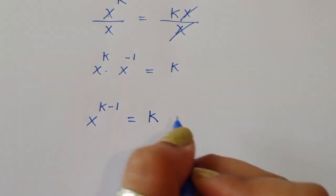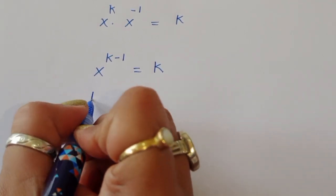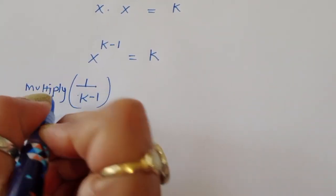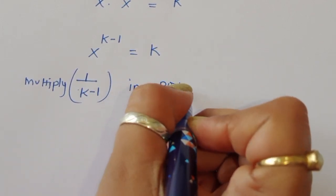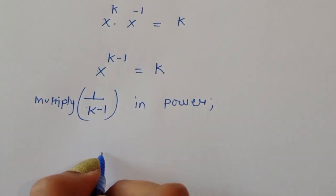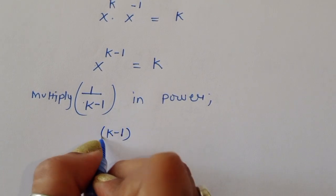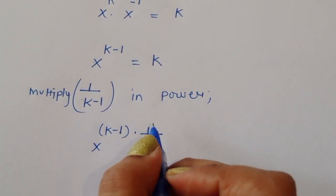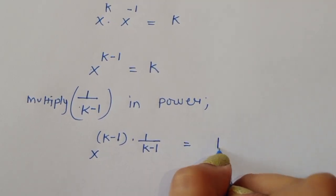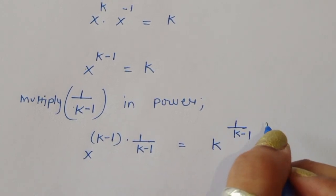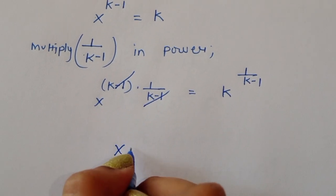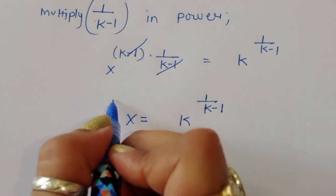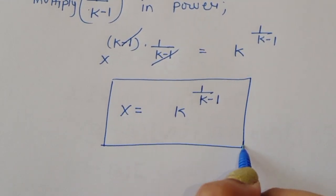Now multiply both sides by the power 1/(k−1) to isolate x. Raising both sides to the power 1/(k−1): x^(k−1) to the power 1/(k−1) equals k to the power 1/(k−1). The (k−1) cancels on the left, so x equals k^(1/(k−1)). This is the value of x.